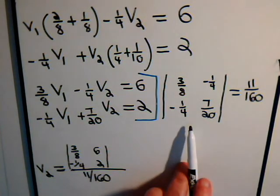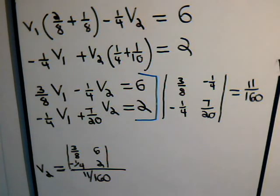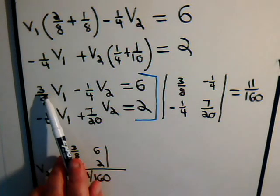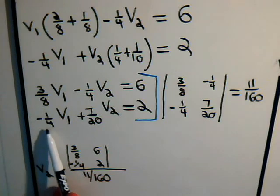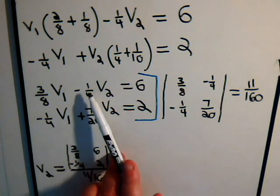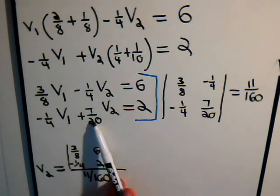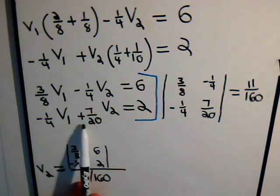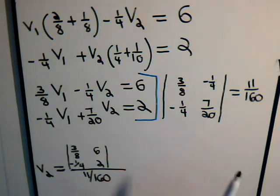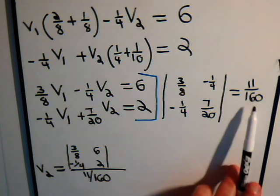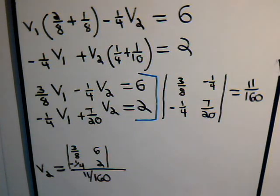And remember for this determinant, we had the coefficients of V1 lined up in a column, and the same thing for V2. We take these two columns and form a 2 by 2 determinant. The determinant's numerical value is used to determine both V1 and V2, because it appears in the denominator each time.